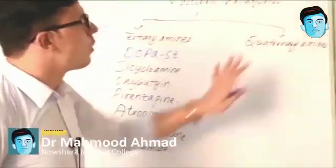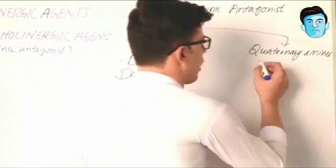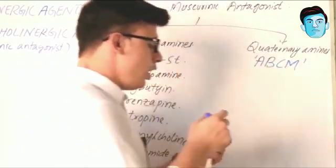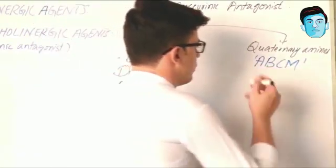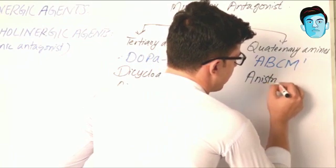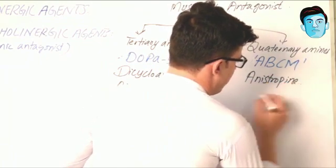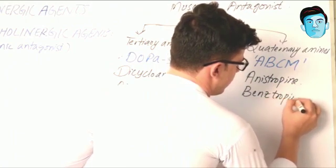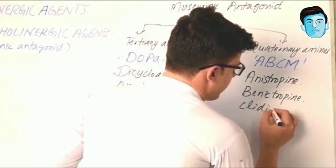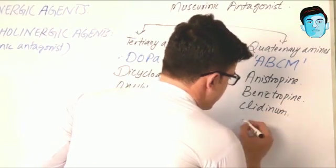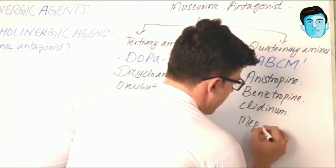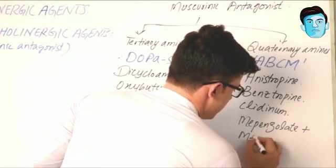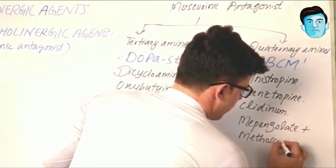Now let's move to quaternary amines. For quaternary amines we have the trick A-B-C-M: A stands for Anisotropine, B stands for Benztropine, C for Clidinium, and M stands for Mepenzolate plus Methscopolamine.